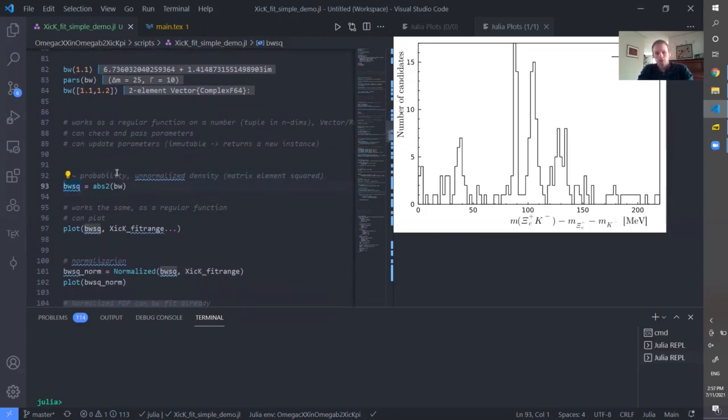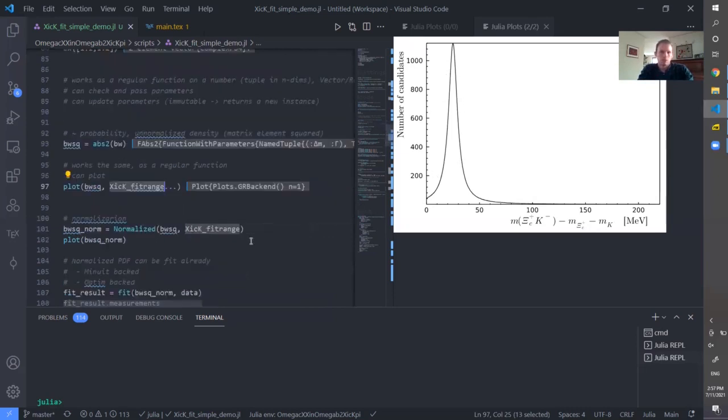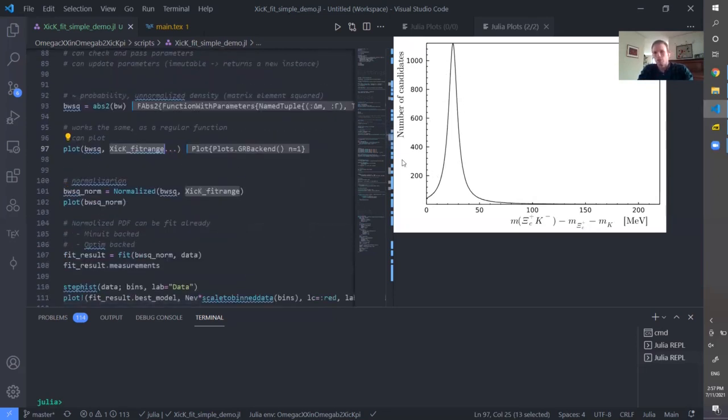Next step is to get the density function out of this. And in order to do this, one needs to square the amplitude. Once it's squared, it can be plotted in the range of the fitting. And this is how the function looks like.